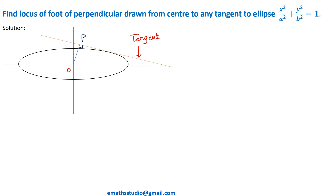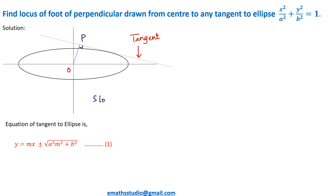Now to get the locus of point P, first of all I am writing the equation of the tangent to the ellipse, which is y = mx ± √(a²m² + b²). Now if you observe, in this equation we are considering the tangent slope as m. So what will be the slope of OP? As OP is perpendicular to the tangent, its slope can be written as −1/m.